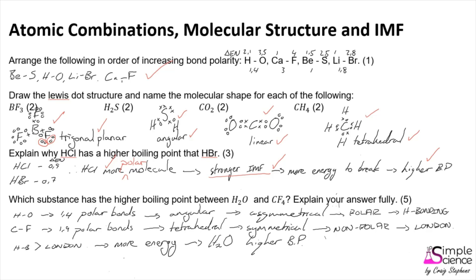It is quite a long answer, but the only way to ensure all five marks are gathered. There is one mark for comparing bond polarity using electronegativity difference, one mark for comparing the symmetry of molecules by referring to the shape of each, one mark for comparing types of intermolecular forces — polar molecules with H–O bonds have hydrogen bonding forces versus London forces — one mark for stating that hydrogen bonding forces are stronger so more energy is required, and a final mark for stating which has the higher boiling point.